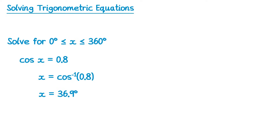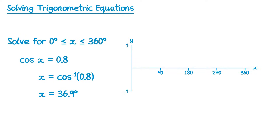To find the other solution, we're going to look carefully at the graph of y equals cos of x. The graph starts up at 1, comes down to 0 at 90, negative 1 at 180, back to 0 at 270, and then back to 1 at 360. This is the graph of y equals cos of x.